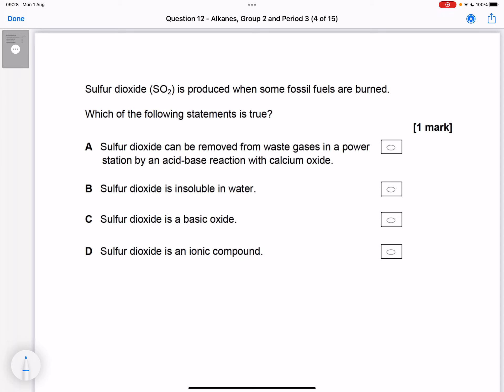It's a knowledge question, we just have to know the answer. Sulfur dioxide can be removed from waste gases in a power station by an acid-base reaction with calcium oxide. That is actually true. If you don't remember that equation, this is the equation we're looking at. This is how calcium oxide is used in cooling towers to remove sulfur dioxide and minimize the effect of acid rain.